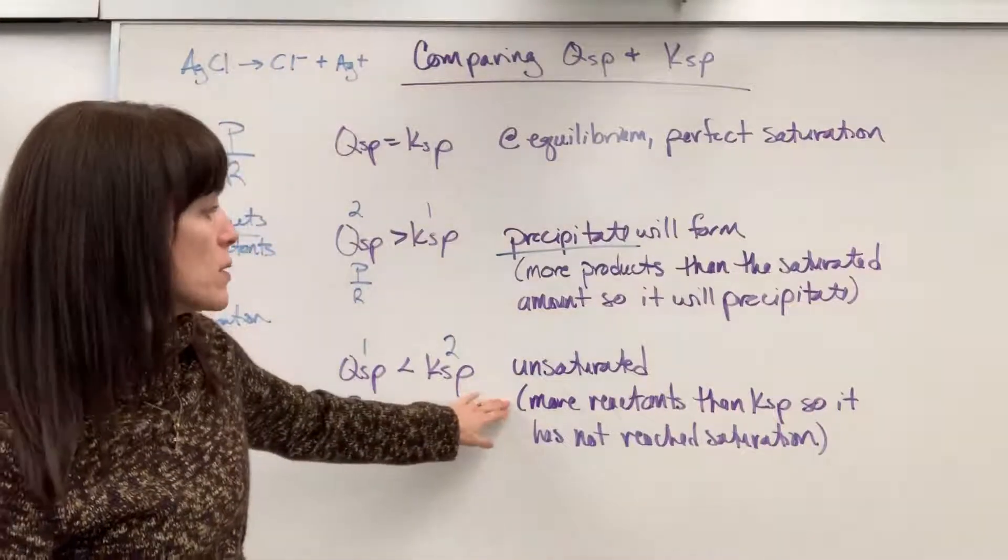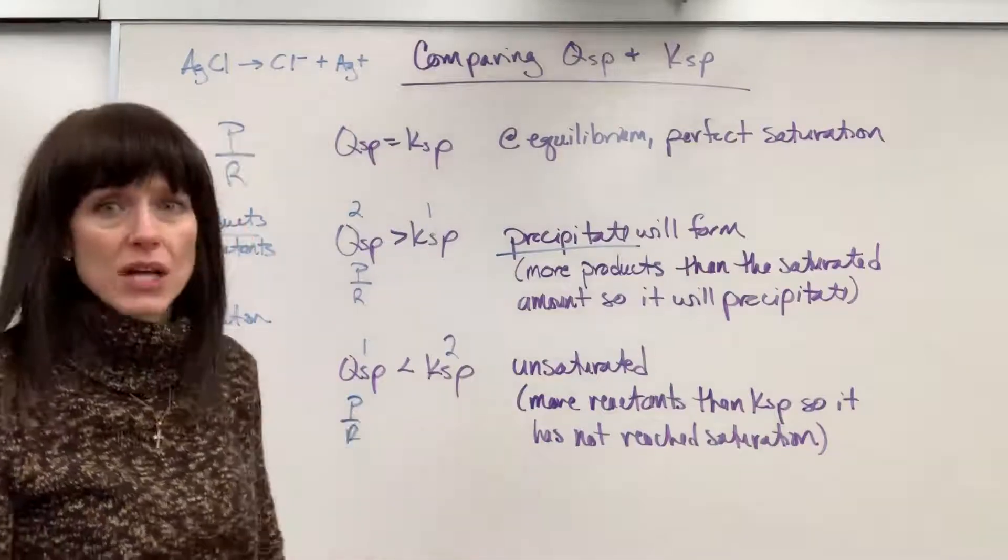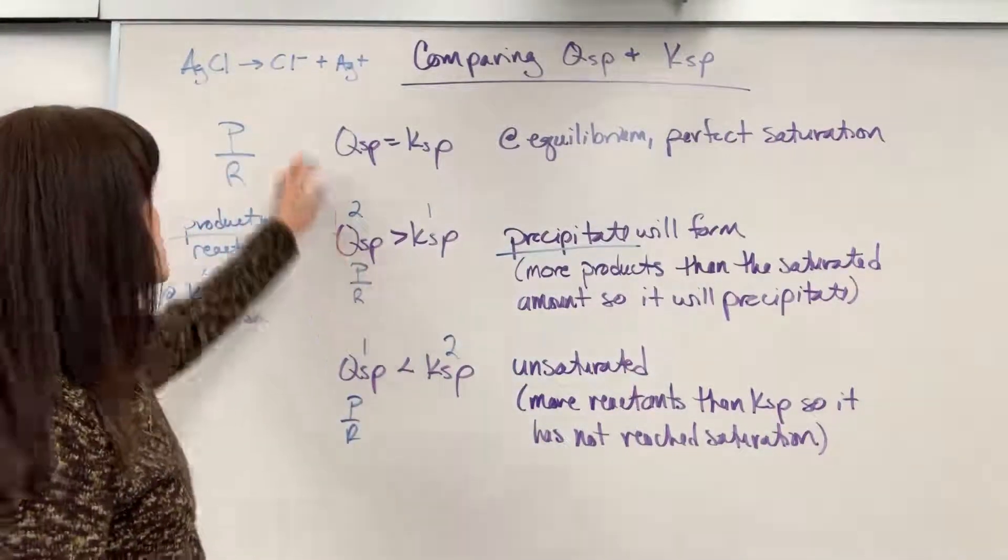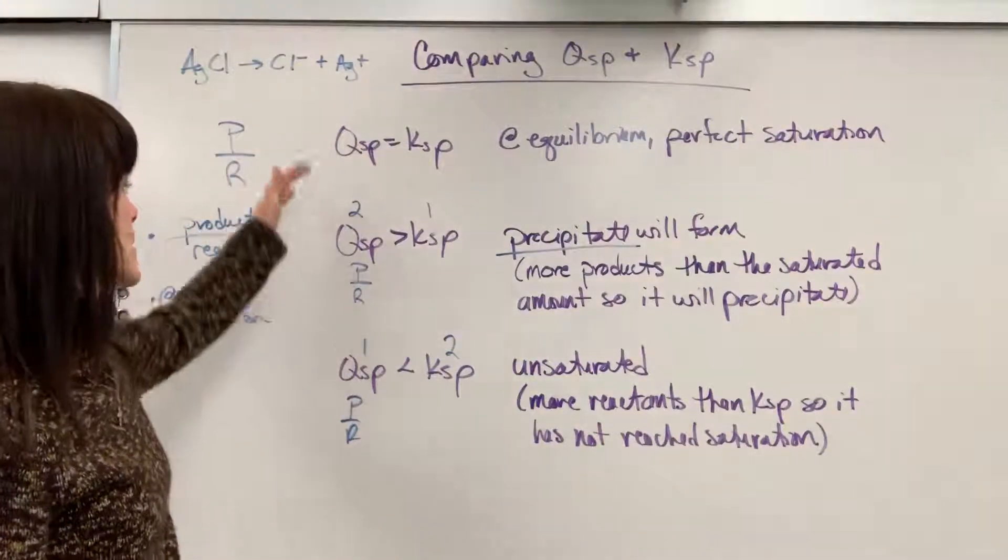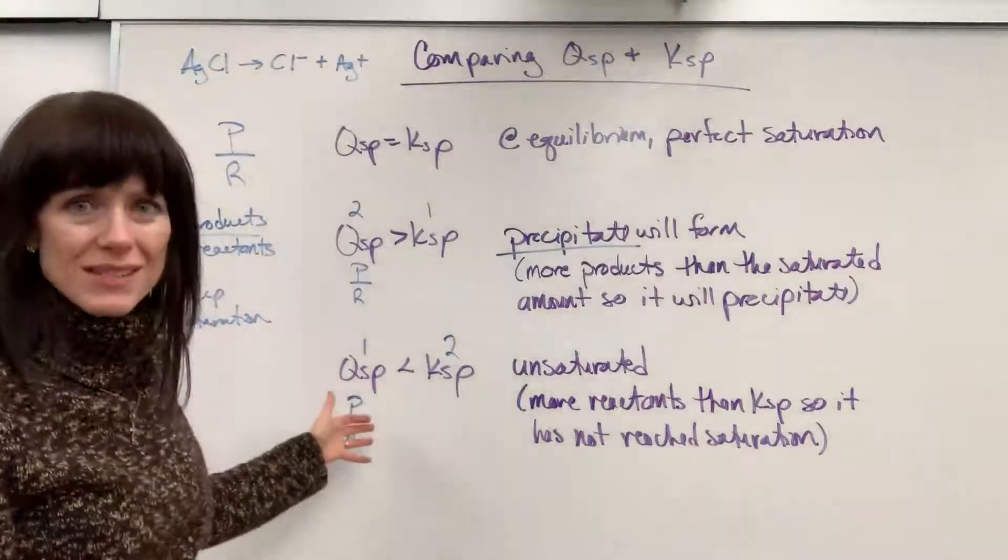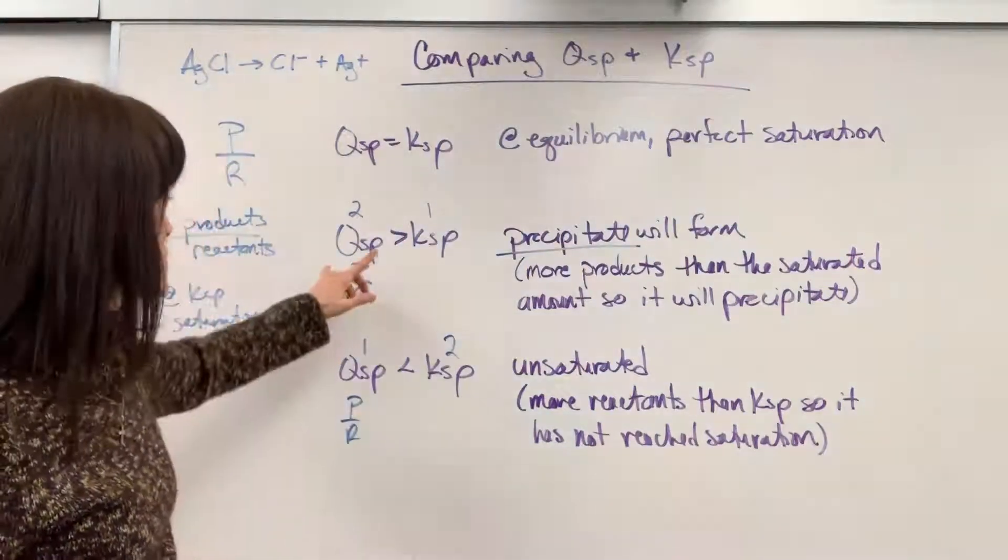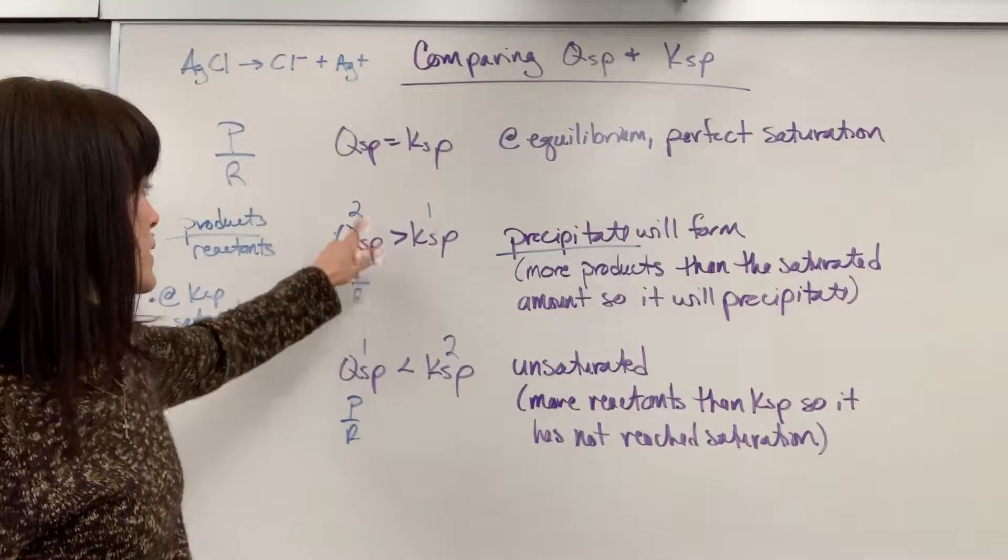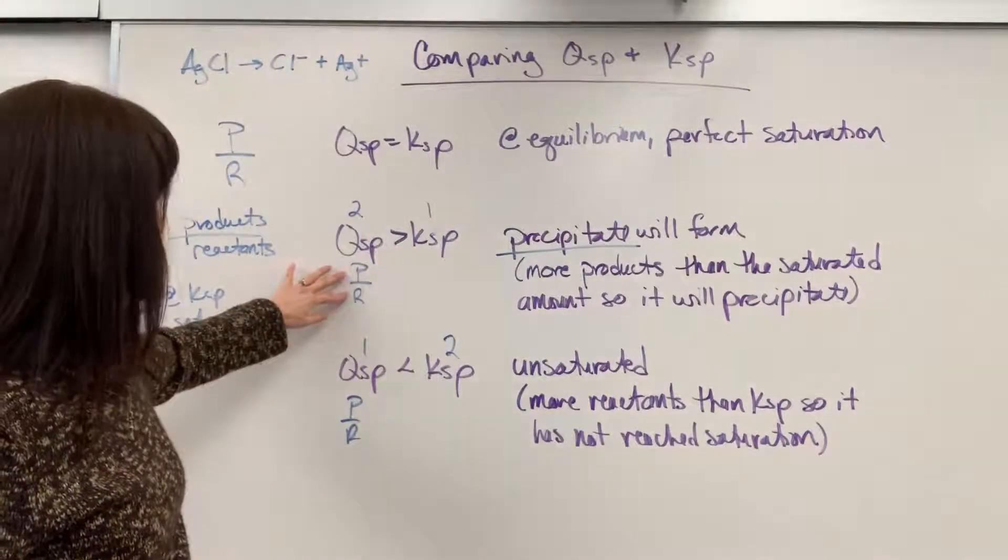So notice what I put here is your takeaway. More reactants than the KSP, so it has not reached saturation. We haven't maxed out. I can dissolve more. All right. So take a minute, wrap your head around these ideas. Don't memorize this straight out. Use the little technique of putting one and two for the greater or less than. Remember products over reactants.